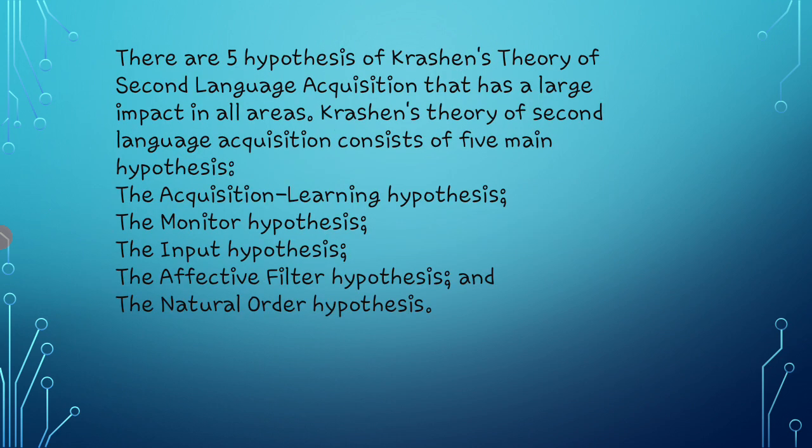There are five hypotheses of Krashen's theory of second language acquisition that have a large impact in all areas. These five main hypotheses are: first, the acquisition-learning hypothesis; second, the monitor hypothesis; third, the input hypothesis; fourth, the affective filter hypothesis; and the last one is the natural order hypothesis.